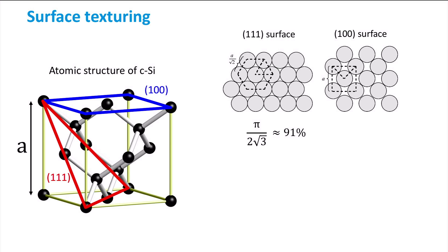For the 1 1 1 orientation, this packing density is calculated to be pi over 2 times the square root of 3, which is around 91%. For the 1 0 0 orientation, the packing density is pi over 4, which is around 79%.